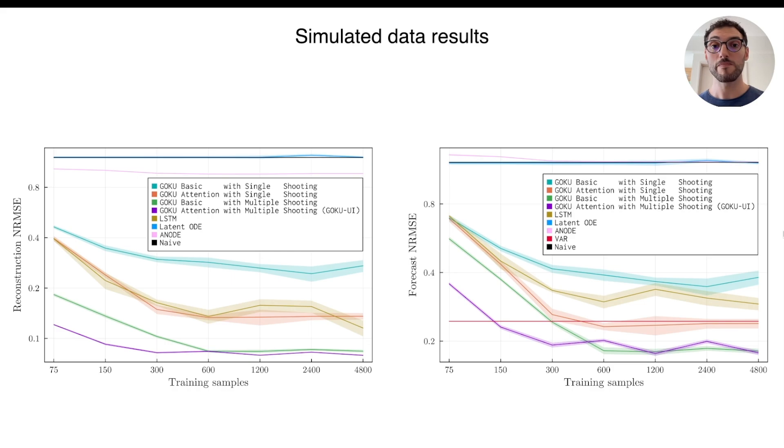Let's dive into the results. This corresponds to simulated data. On the left, you'll find the reconstruction error, and on the right, the forecast error, both plotted as a function of the training set size. Notice that the axes are in logarithmic scale. Here we can see that just by adding the attention mechanism corresponding to this orange curve, it already improves the performance over the plain GokuNet in turquoise. Training with multiple shooting, this green line, boosts the performance even further, but the best overall performance comes from combining both enhancements, which is Goku UI in violet, achieving a threefold decrease in reconstruction error. It also displays great data efficiency, reaching its peak performance with only 300 samples, while surpassing other models that had been trained with up to 16 times more data.